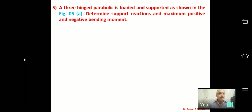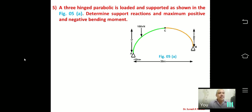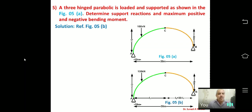In the third problem we have a concentrated load. The arch is not symmetrical — the abutments are not at the same level. The left portion has a rise of 8 m and the right portion has a rise of 4 m. Total length of the arch is 30 m. We first find L1 and L2.